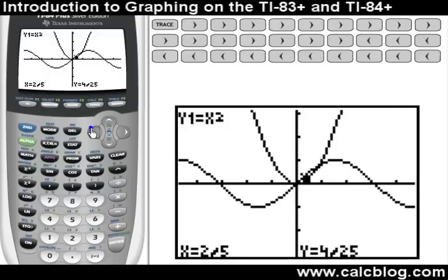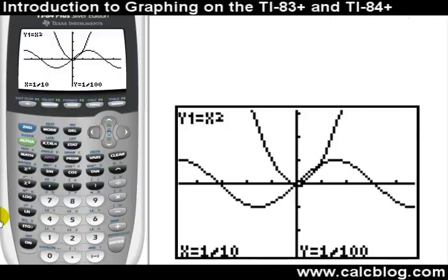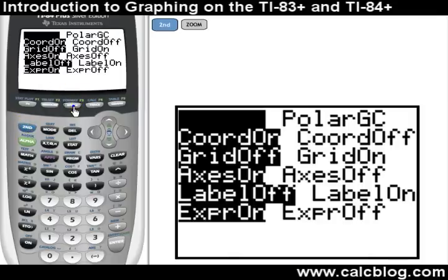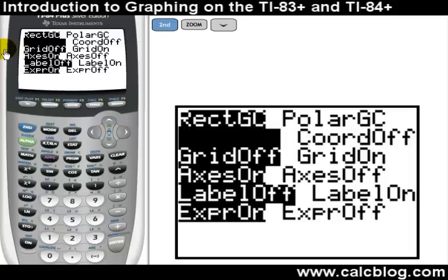Now let's take a quick look at the format menu. This is reached by pressing 2nd to zoom, and it lets us control a wide variety of aspects on how the graph is formatted. RectGC and PolarGC let us choose how coordinates are displayed when using the trace function. CoordOn and CoordOff toggle whether or not coordinates are displayed when using the trace function. It's usually best to leave this one on.